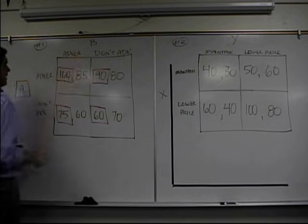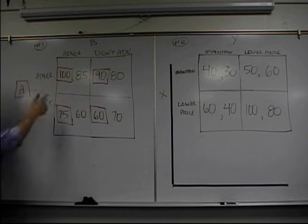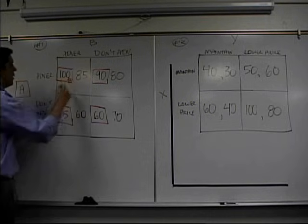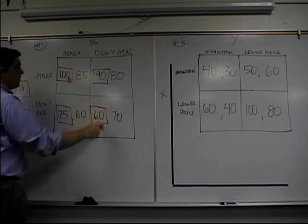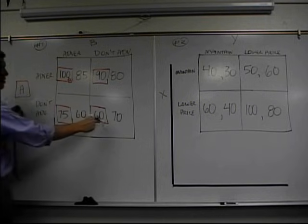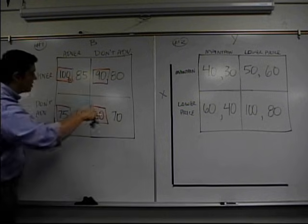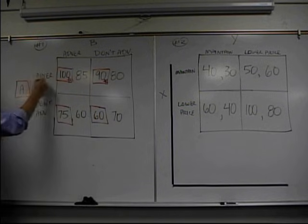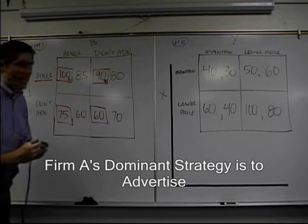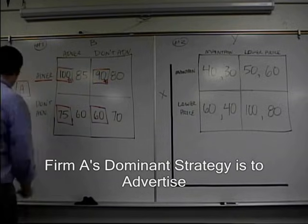If firm B advertises, what should firm A do? Should they advertise and get 100 or should they not advertise and get 75? Oh, they should do 100. And if firm B doesn't advertise, which one is better for them to do? Well, 60 compared to 90. Again, we're looking at just the boxed ones. 90. Okay, firm A advertises, their dominant strategy. That's the one they should do regardless of what the other firm does.